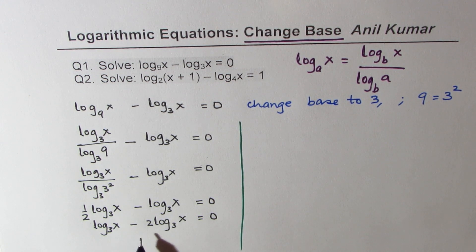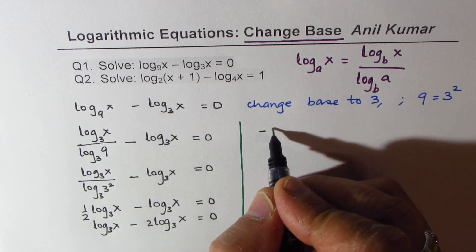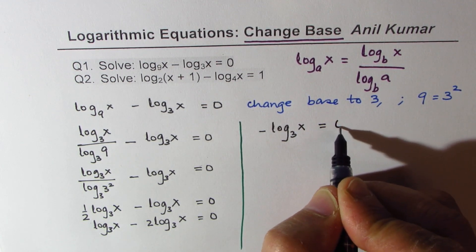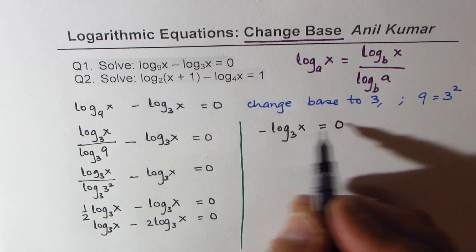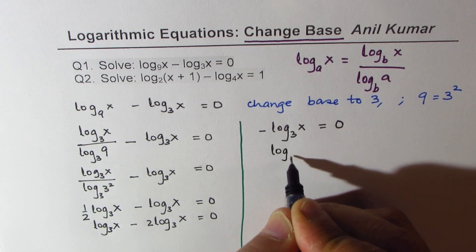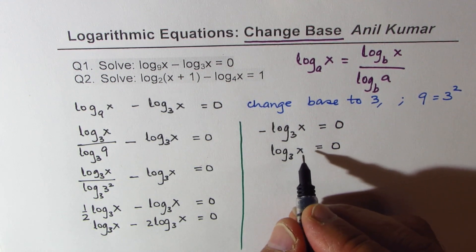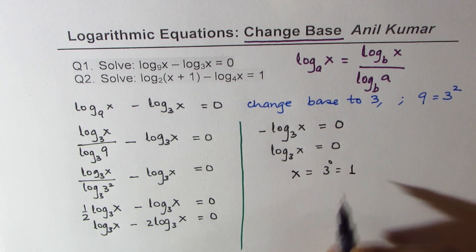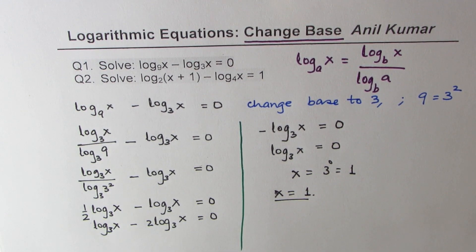This simplifies to negative one times log base three of x equals zero. Since the coefficient is negative, multiplying both sides by negative one gives log base three of x equals zero. Writing it back in exponential form: x equals three to the power of zero, which equals one. So our solution is x equals one.